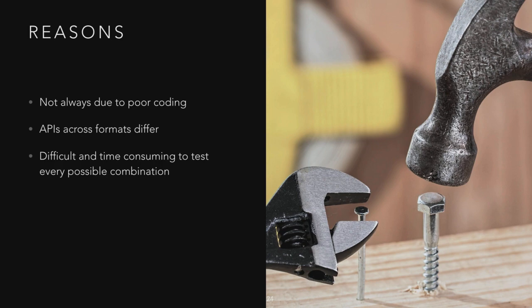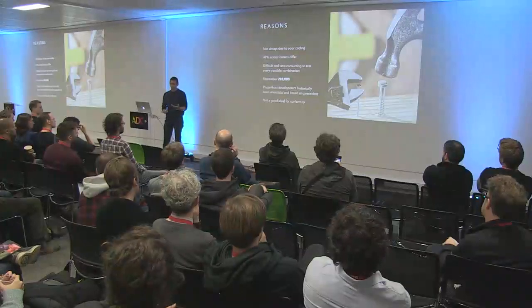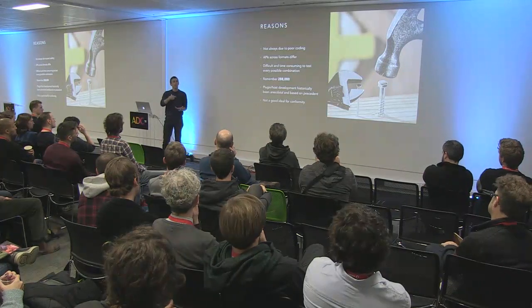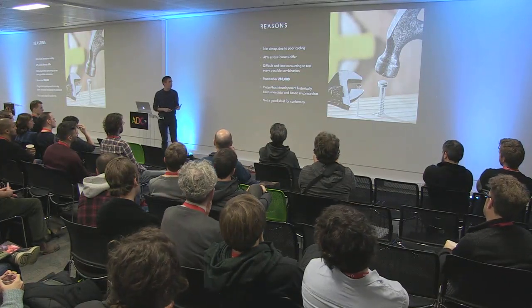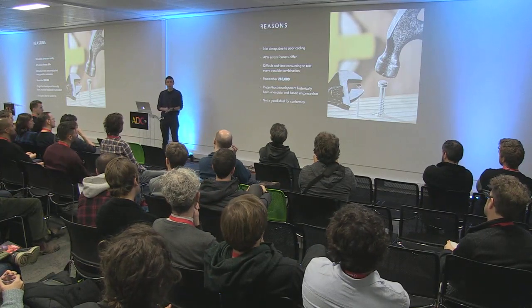Why do these problems happen? It's not just poor coding — APIs differ across formats, especially in a cross-platform toolkit like JUCE that writes to a common API across many platforms. It's also difficult and time-consuming to test every possible combination because all hosts have slightly different behavior, and remember our complexity factor of nearly 300,000. Historically, plugin and host development has been anecdotal and based on precedent — whatever the first person did is what everyone else goes on, which isn't ideal for conformity.